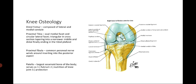For knee osteology, the knee is composed of the distal femur, proximal tibia, proximal fibula, and the patella. The distal femur is composed of the lateral and medial condyles. For the proximal tibia, the medial facet is oval compared to the lateral facet, which is circular in shape. Proximally it's triangular in cross-section, tapering into a narrower middle and distal portion, ending into the tibial plafond.